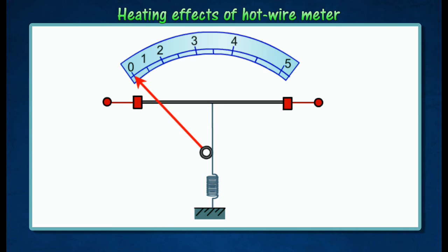When a current flows through the platinum wire, it expands, thereby allowing it to be pulled downwards by the silk thread attached to the spring.